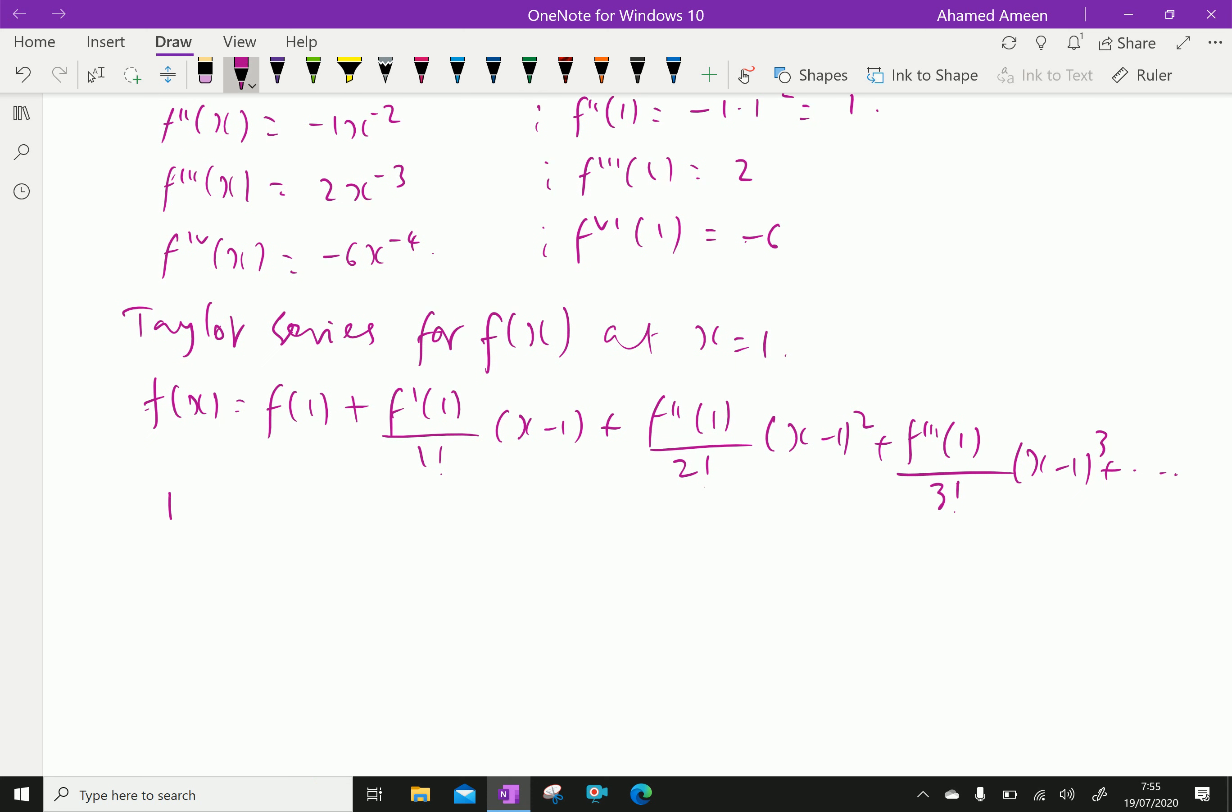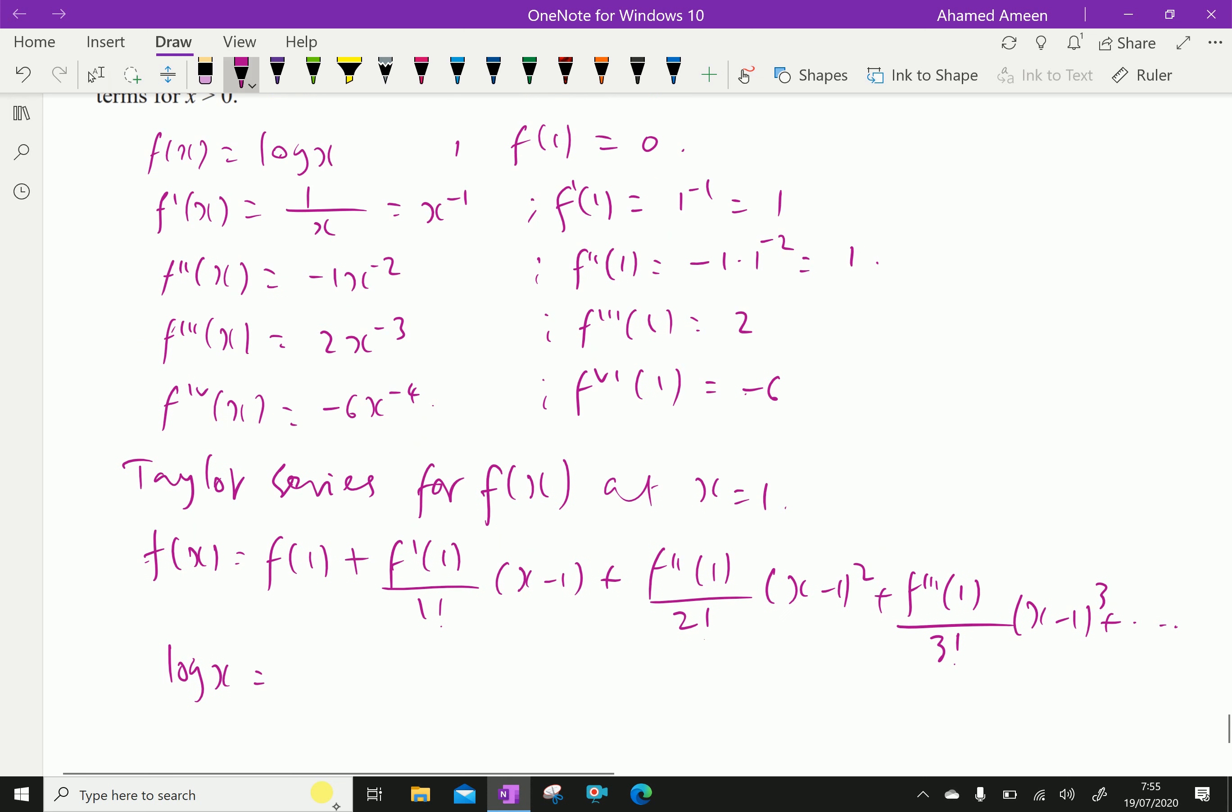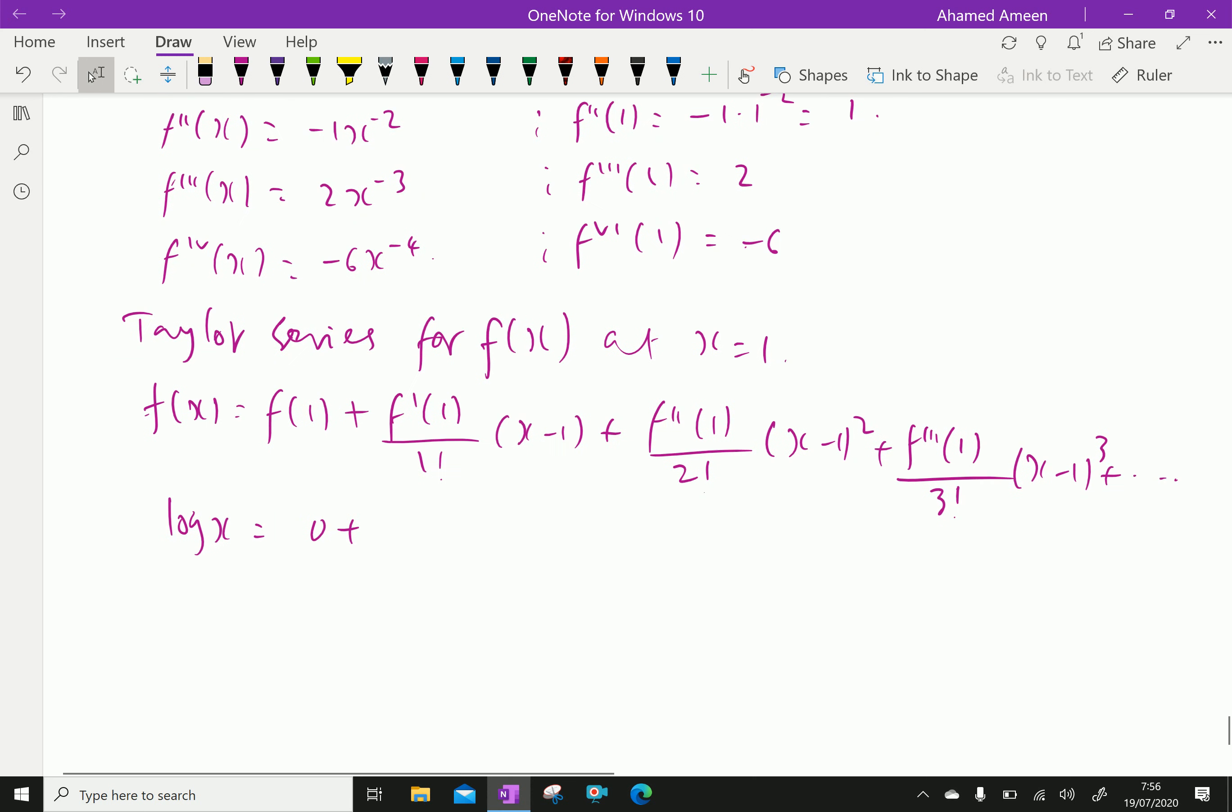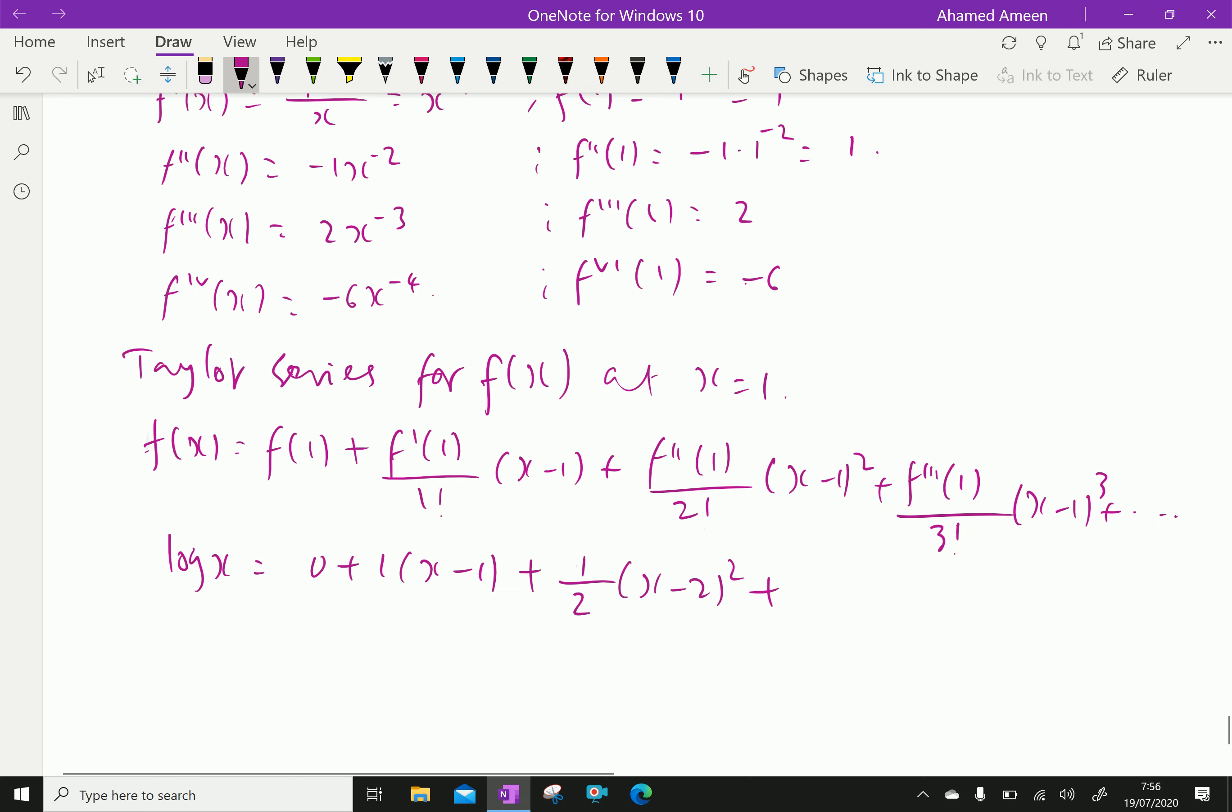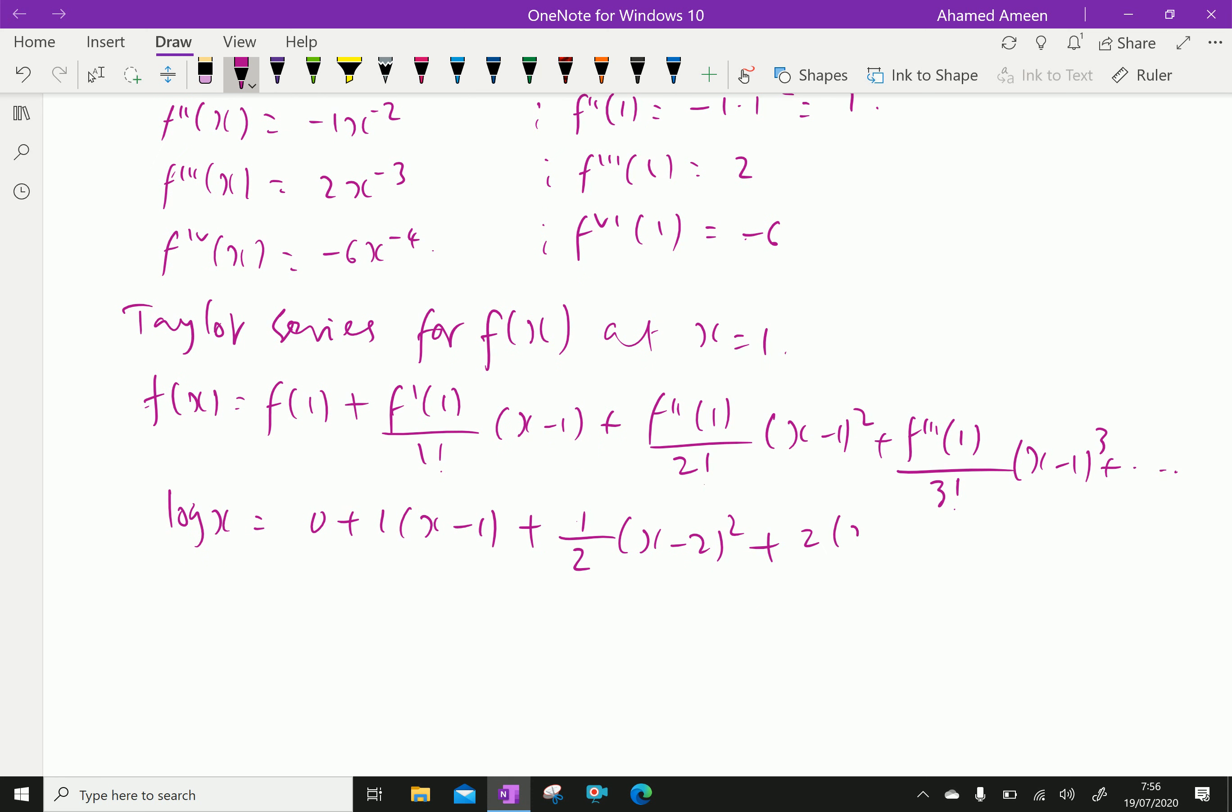Now f(x) is log x, so f(x) equals f(1), which is 0, plus f'(1) is 1 times (x-1) plus f''(1) is -1 over 2 factorial times (x-1)² plus f'''(1) is 2 over 3 factorial times (x-1)³.